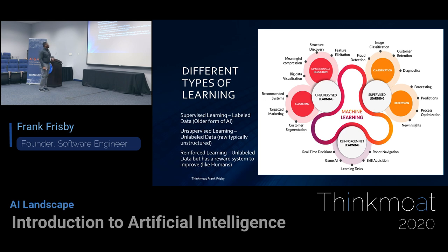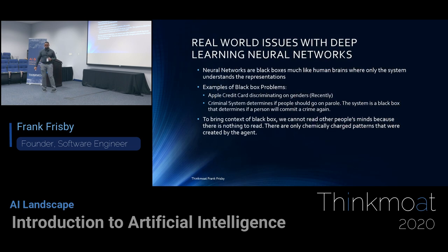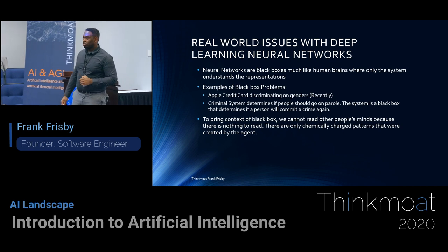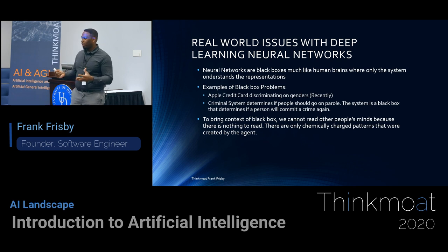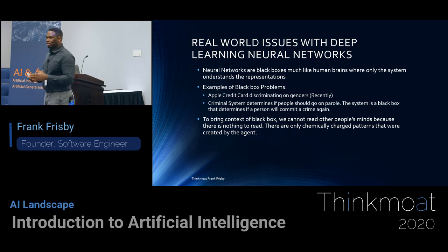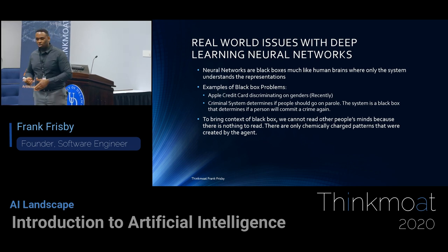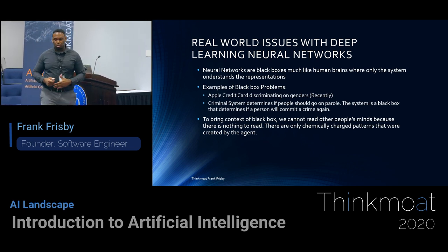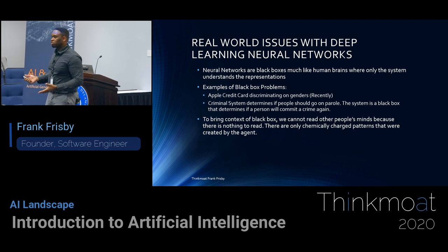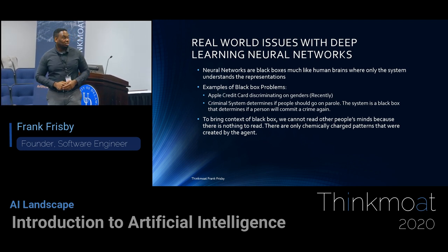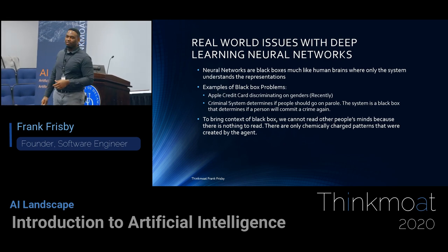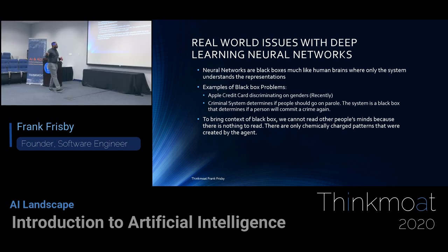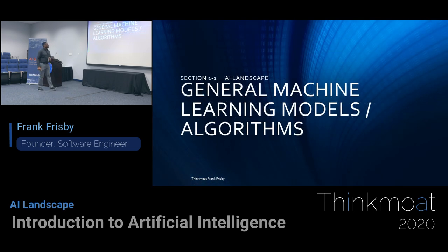Some real-world issues working with deep learning: neural networks are black boxes. Once it learns something, it converts it into an encoding. At that point you can no longer interpret it — it's nothing but matrices and vectors. So if someone wants to understand why it made a certain decision, it doesn't actually know. You have to build a system to work around this.